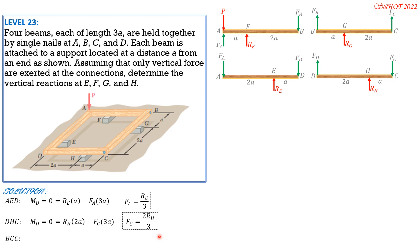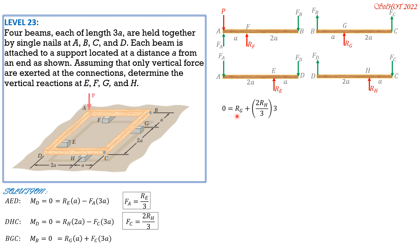Proceeding to beam BGC: setting moment at B equal to zero gives R_G times A plus F_C times 3A equals zero, so F_C equals negative R_G/3. Since F_C also equals (2/3)R_H, substituting gives R_G plus 2R_H equals zero. This is an important relationship between the vertical reactions.